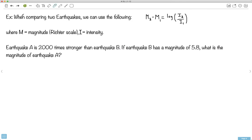So let's do an example where we can put all this in practice. When comparing two earthquakes, we can use the following. So we have this equation that governs how earthquakes work, at least how the Richter scale works. M is the magnitude on a Richter scale. I is the intensity. So when we're comparing two different earthquakes.